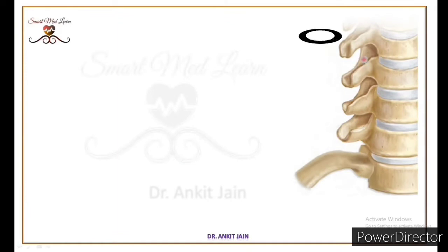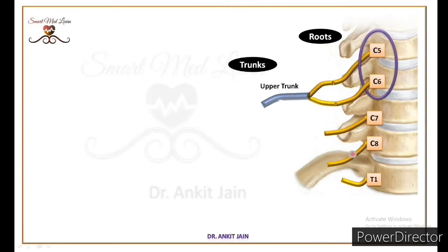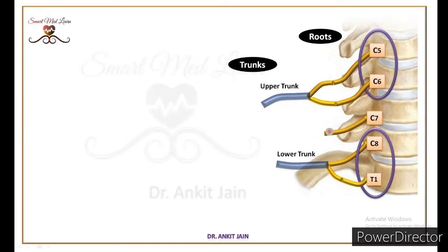Roots ka formation anterior primary rami of C5, C6, C7, C8 and T1 spinal nerves se hota hai. Ab ye roots trunk ka formation karengi. Upar ki do roots, that means C5 and C6, aapas me mil kar upper trunk ka formation karengi. Isi tarah, niche ki do roots, mean C8 and T1, aapas me mil kar lower trunk ka formation karengi. Ab beach me C7 root jo hai woh akele bach gahi hai — ye akele hi aage chal kar middle trunk ka formation karegi.